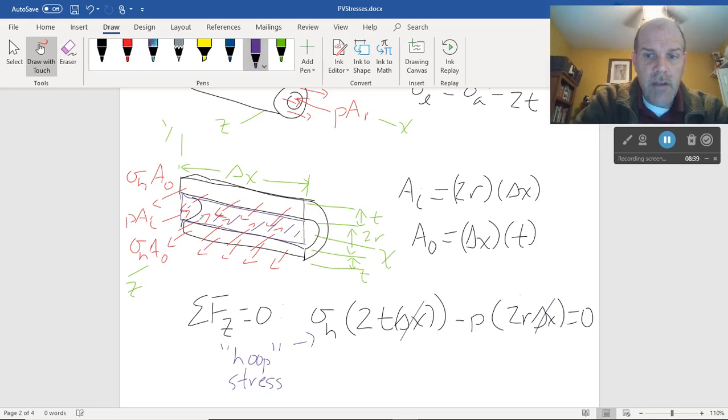Sigma h times the area over which it acts. Well, I've got a t delta x on top, and I've got a t delta x on bottom. So I've got 2t delta x. And that's what the hoop stress does. The pressure minus pressure times, we said it was 2r delta x equals zero. Well, I can do some cancellation. Delta x's go away, the 2's go away. Hey, delta x went away. Winning, right? That's what we wanted. That's a win right there, all right? Sigma h is then pr over t.